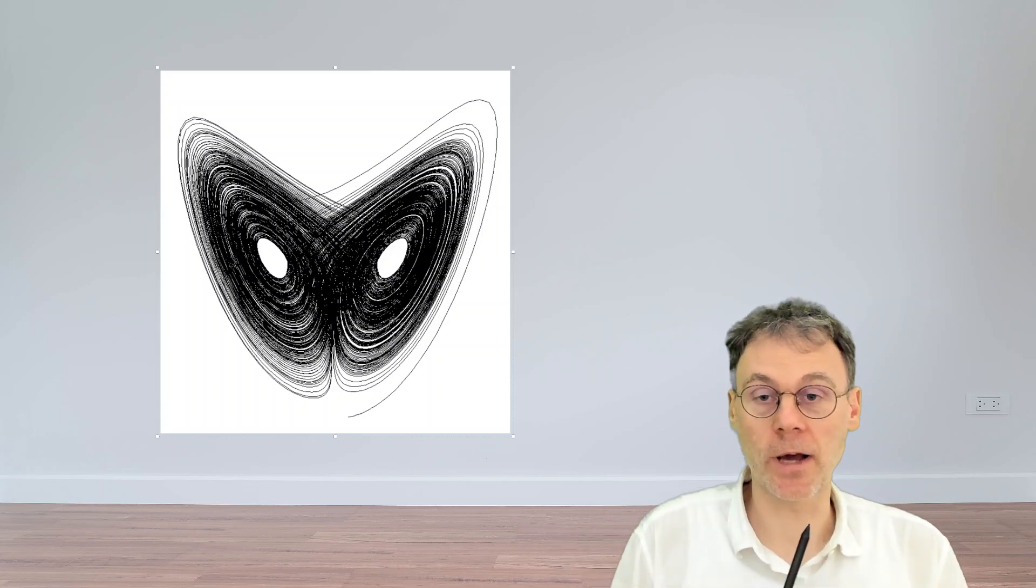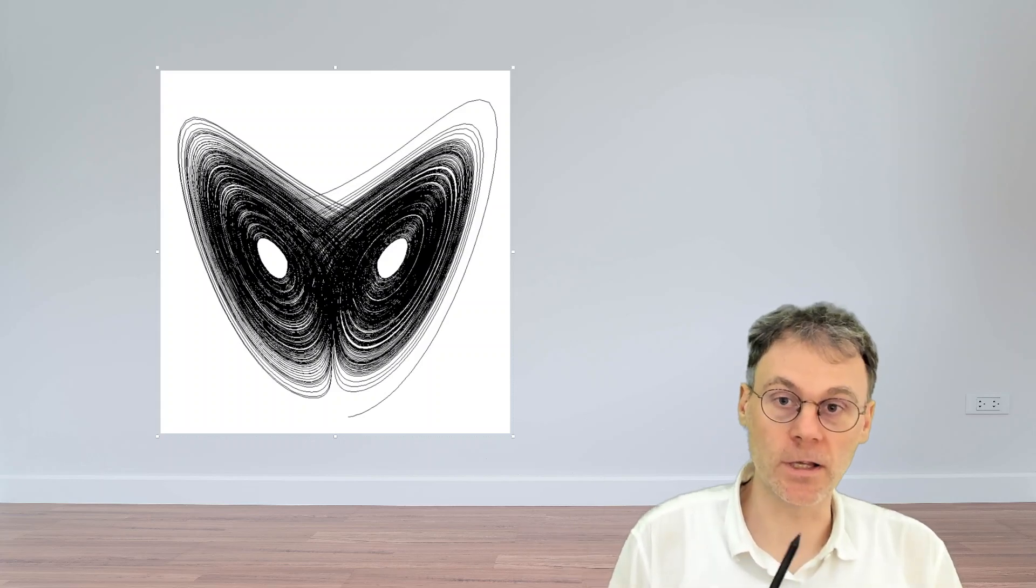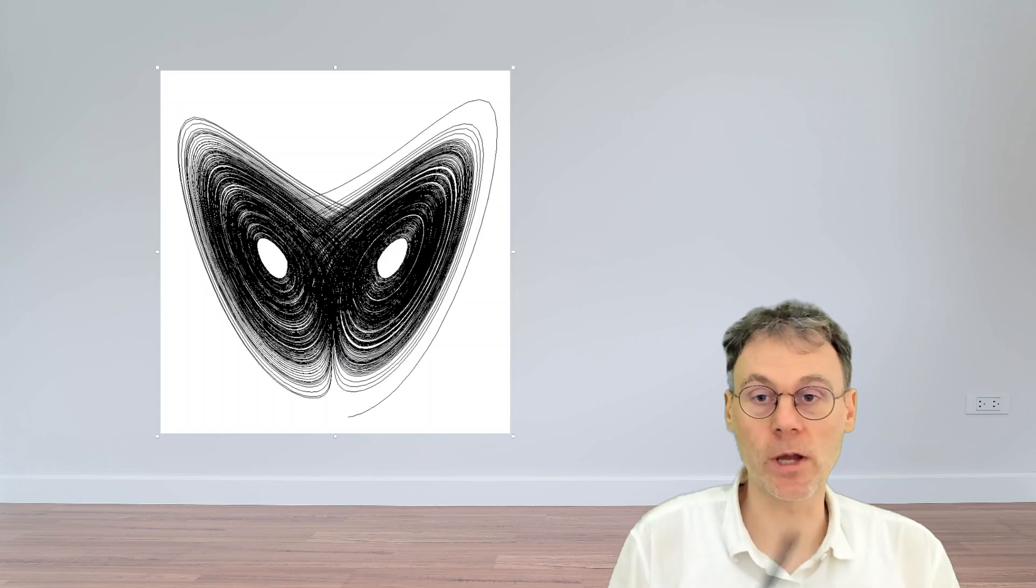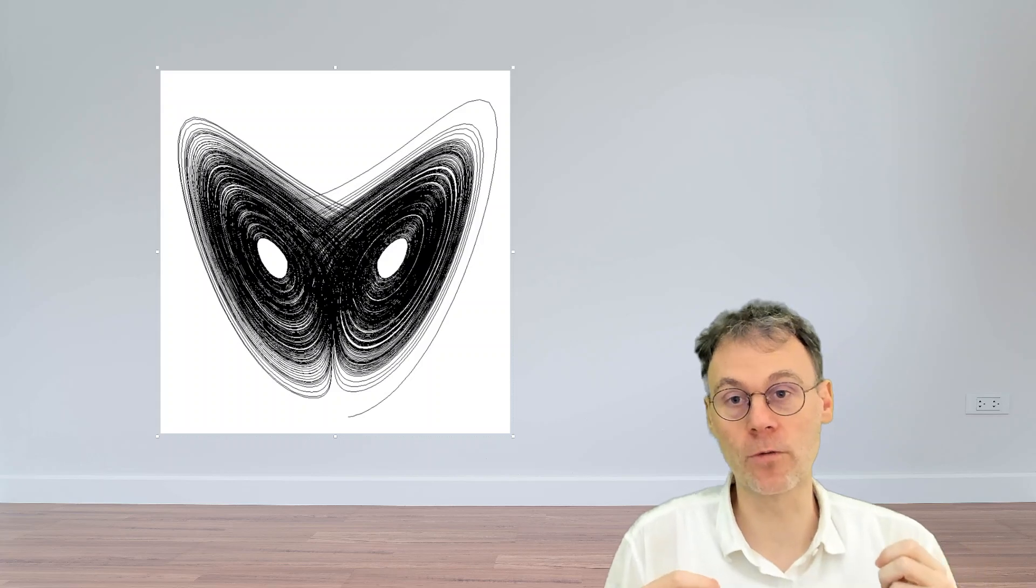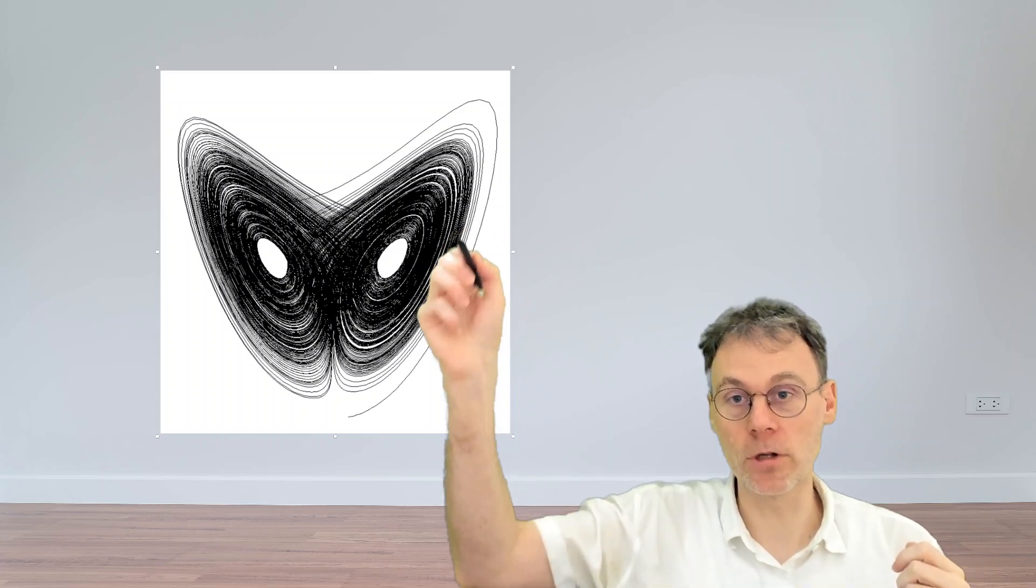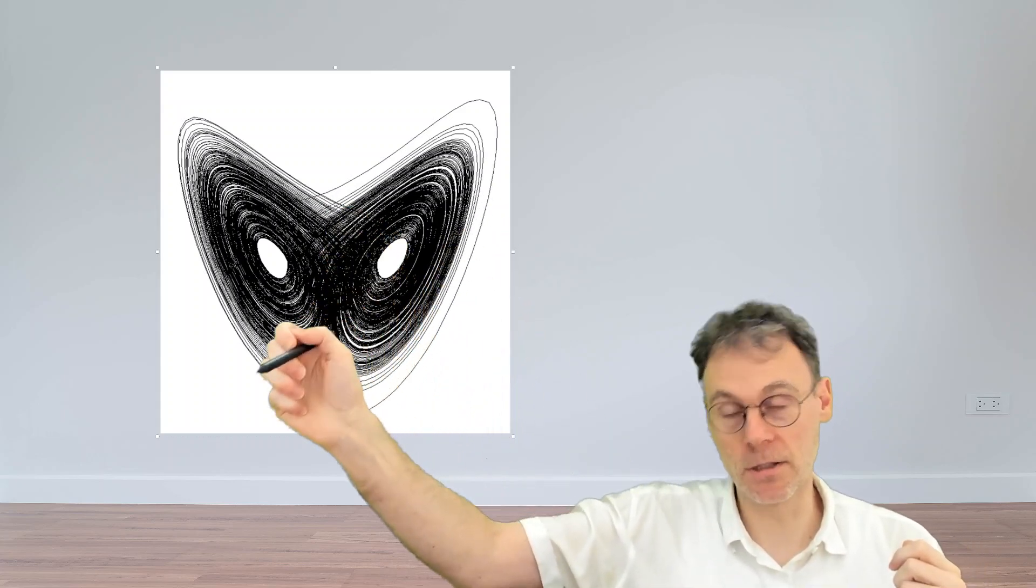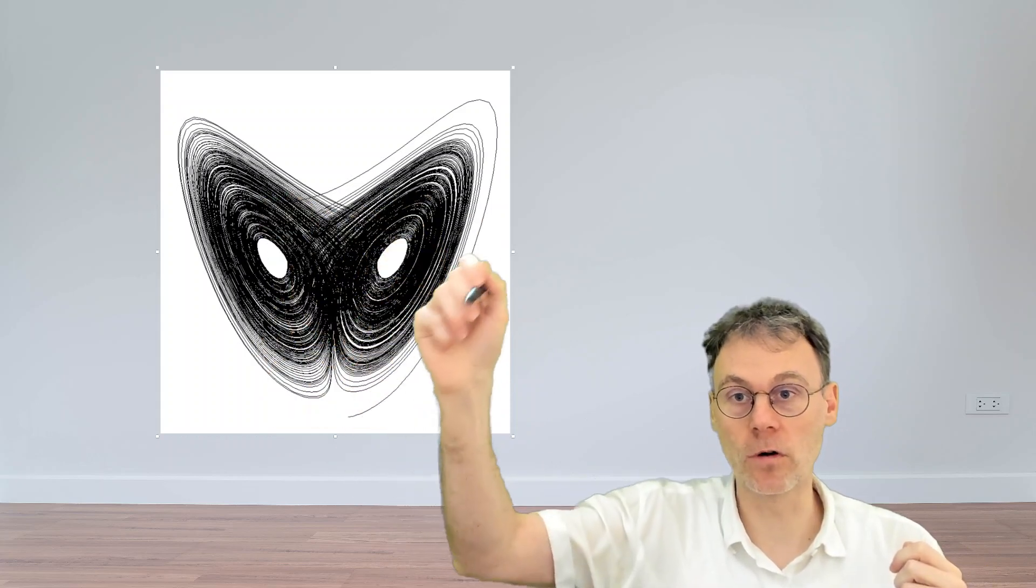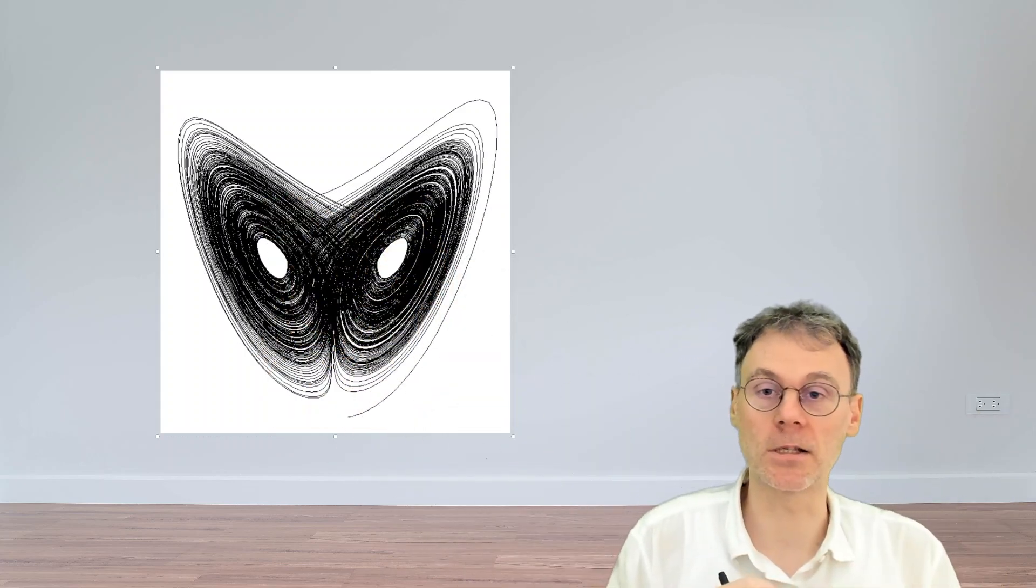Now, we have seen chaotic attractors before in the context of the Enol map, but there the situation was different. That was a discrete dynamical system, so there the attractor was formed by collecting all of the points where the discrete system jumped to, and if you joined all of these points together, they formed some sort of continuous set.